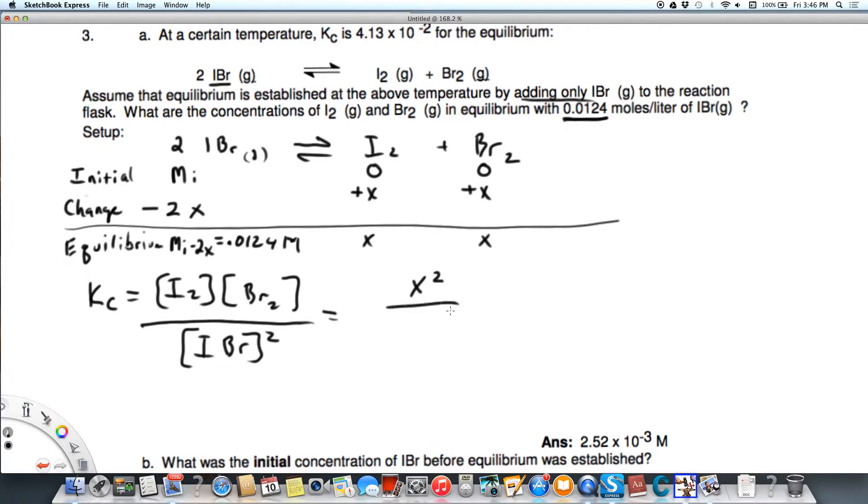So that means we have x squared over 0.0124 squared, and that's going to equal my Kc, which is given as 4.13 times 10 to the minus 2. So we had to have that as given, otherwise there would be too many unknowns.